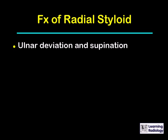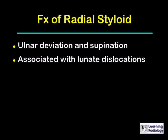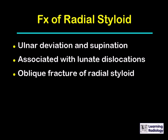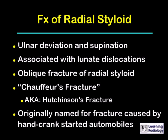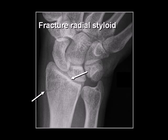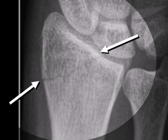A fracture of the radial styloid occurs because of ulnar deviation and supination. It is associated with lunate dislocations on occasion. It is an oblique fracture of the radial styloid, called the chauffeur's fracture, also known as a Hutchinson's fracture. It was originally named for the fracture caused by the hand crank used to start old automobiles snapping back and striking the distal radius. The white arrows point to the fracture line.